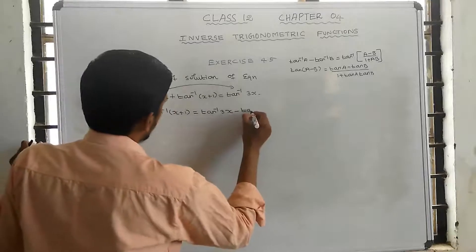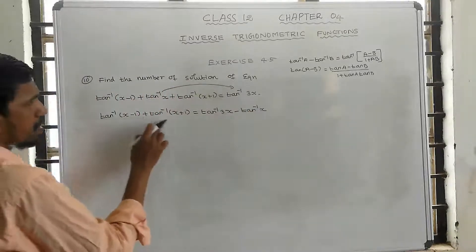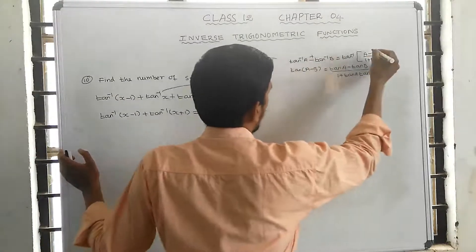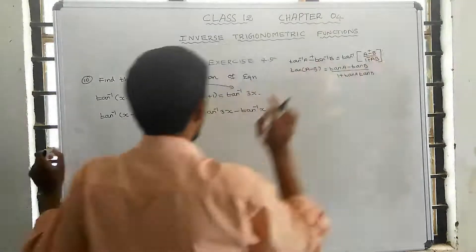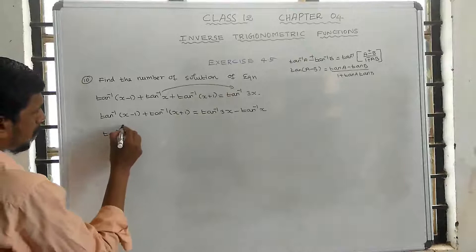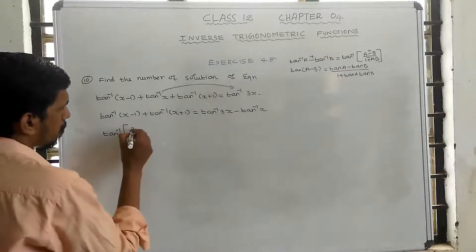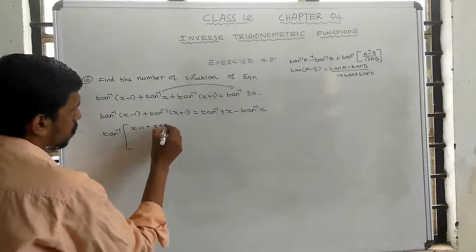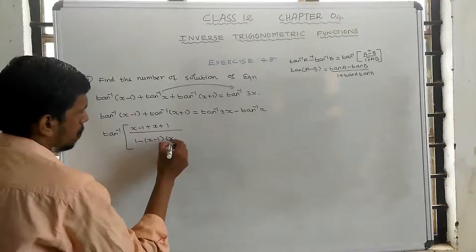Rearranging: tan inverse (x plus 1) equal to tan inverse 3x minus tan inverse x. Now applying the formula tan inverse a plus tan inverse b: the numerator is (x minus 1) plus (x plus 1), divided by 1 minus (x minus 1) into (x plus 1).